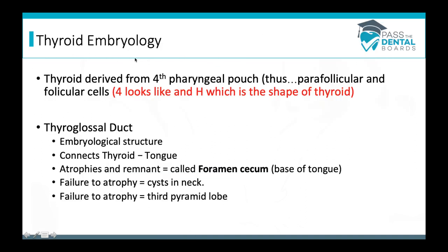For thyroid embryology, a helpful hack is to just generalize things, because remembering all the details about parafollicular cells and follicular cells and which pouch they originate from can be confusing. As long as you know the basic components of the thyroid gland, you know where they derive from — every part of the thyroid, including parafollicular and follicular cells, is derived from the same pouch.